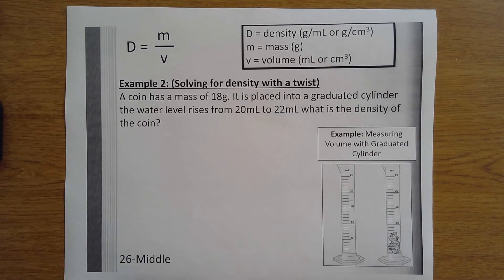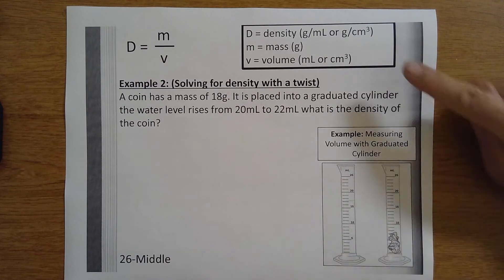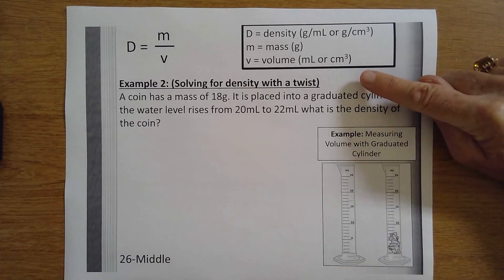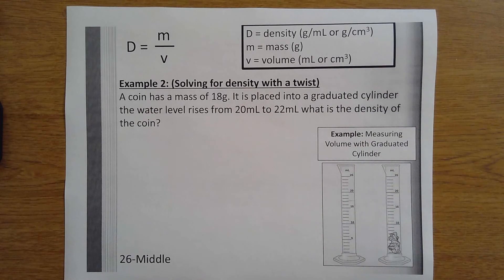On the middle of your page 26, we are going to do Example 2. We're going to solve for density with a twist. I don't know how else to say that, but there's an extra measurement.